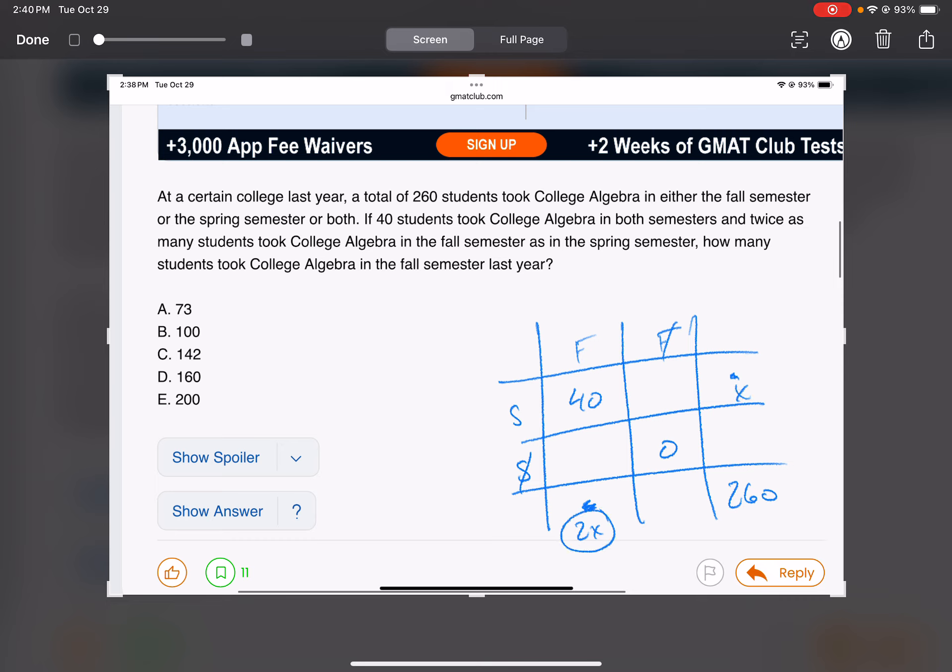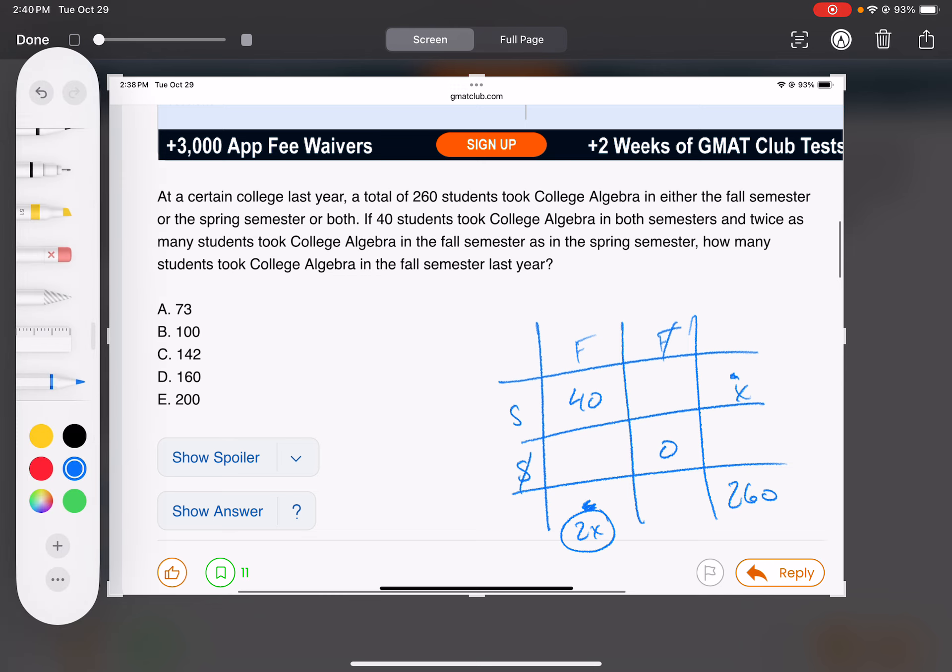This 2x, this is the total for who took it in the fall. Twice as many there as the total for who took it in the spring.